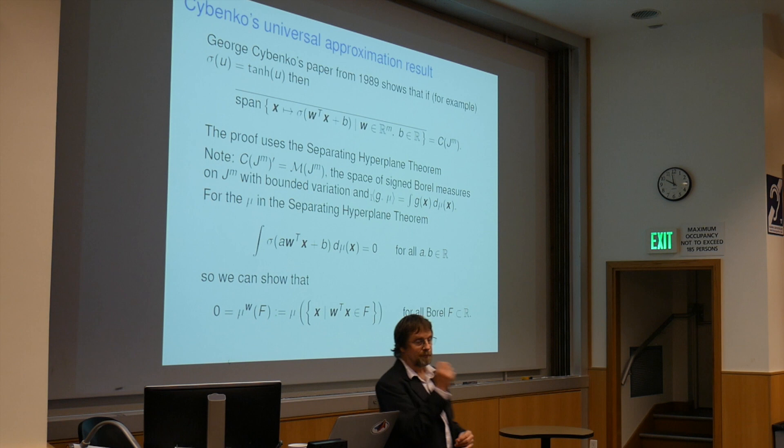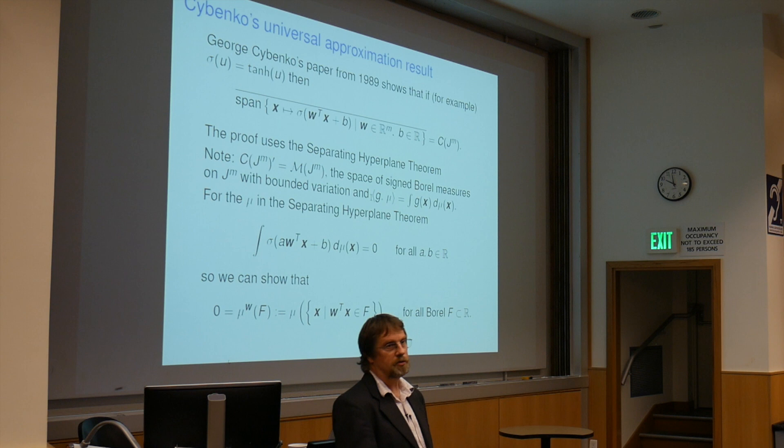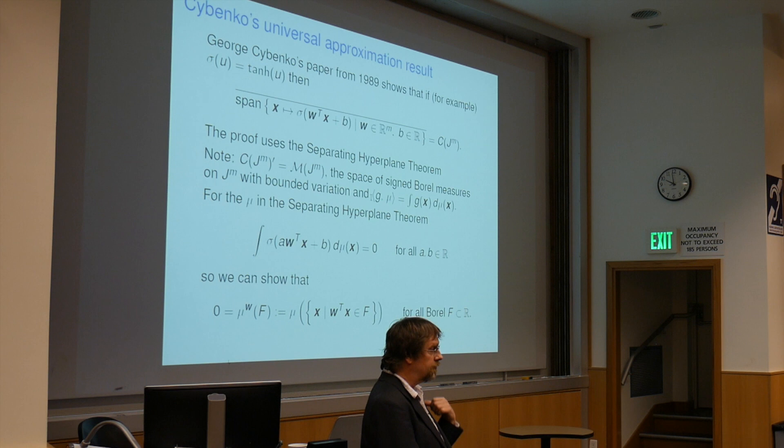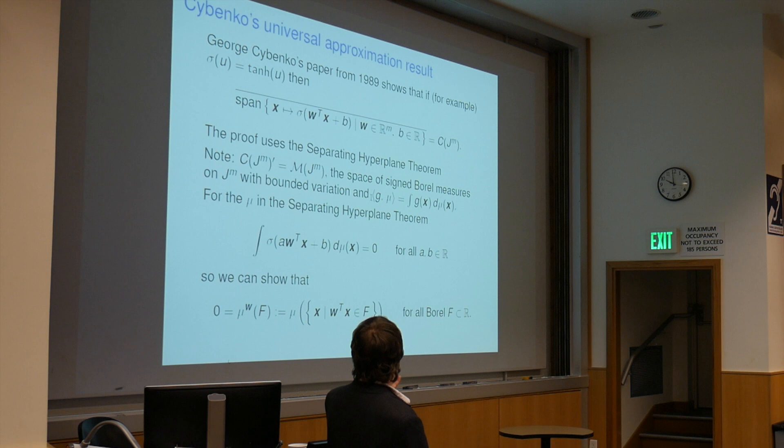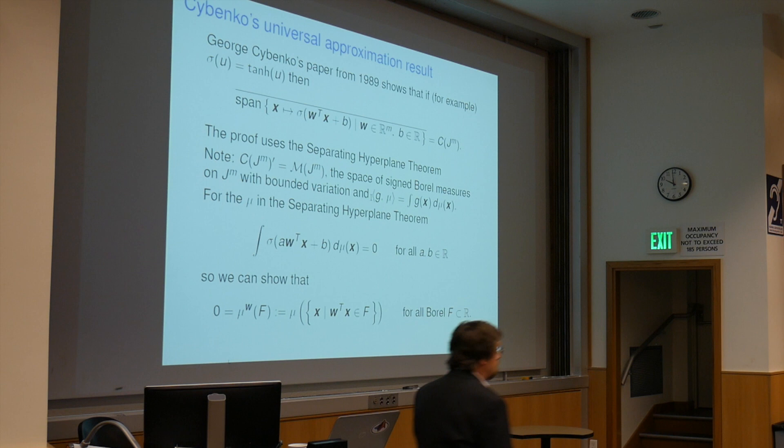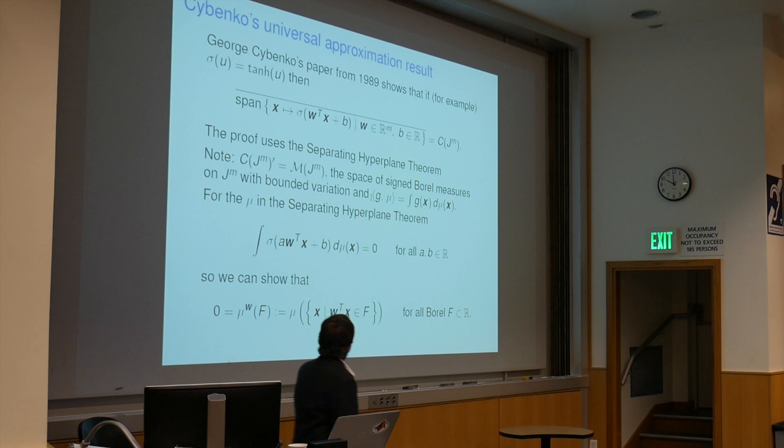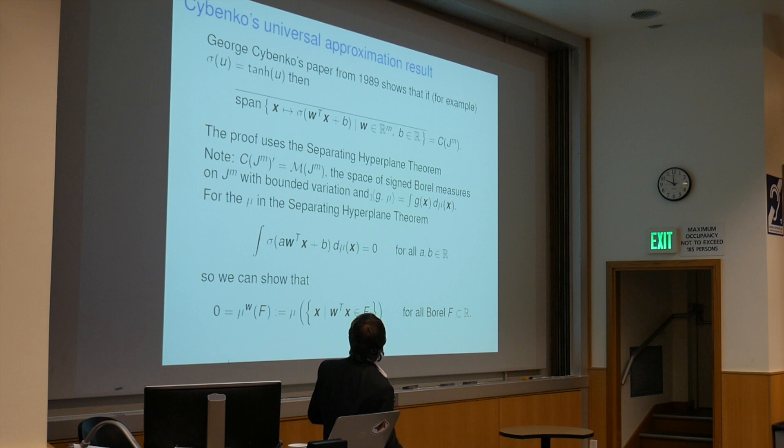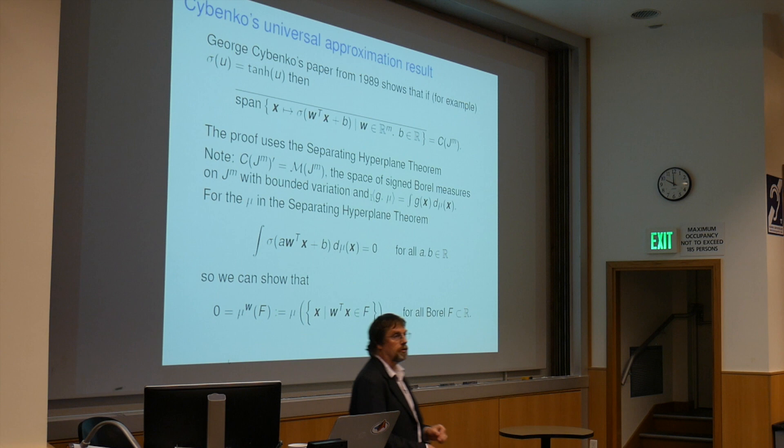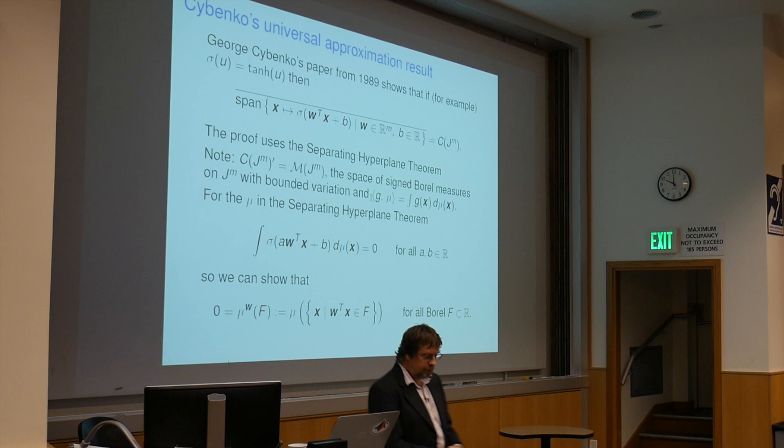Now this work started out from a reading of George Cybenko's paper from 1989, and he was able to show that for a sigmoidal function - it doesn't have to be a hyperbolic tangent, there's a lot of things it'll do so long as they have finite limits as u goes to negative infinity and plus infinity and they're different - you can show that the span of all those ridge functions over all weight functions is indeed going to give you the entirety of the space of continuous functions over the hypercube. Now the dual space that I've noted there is the space of Borel measures of bounded variation. They can be signed Borel measures, they're not necessarily positive.